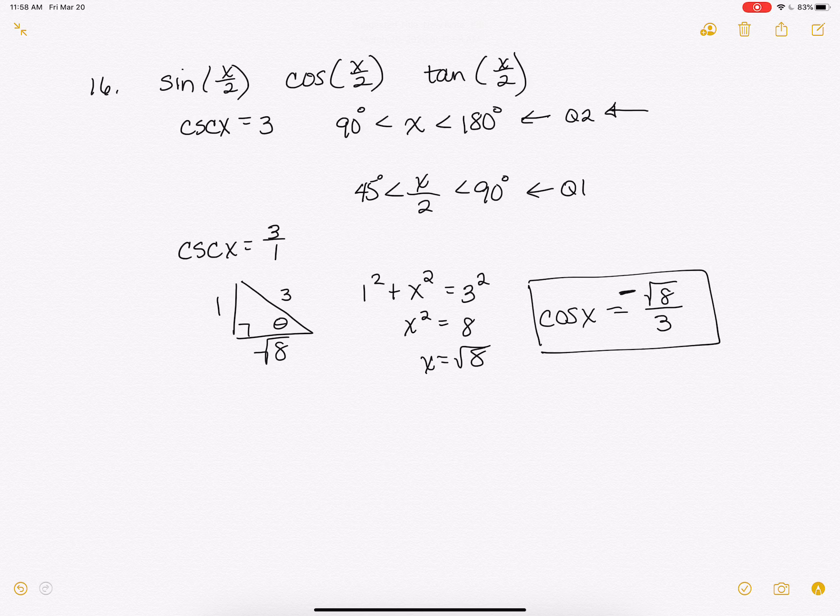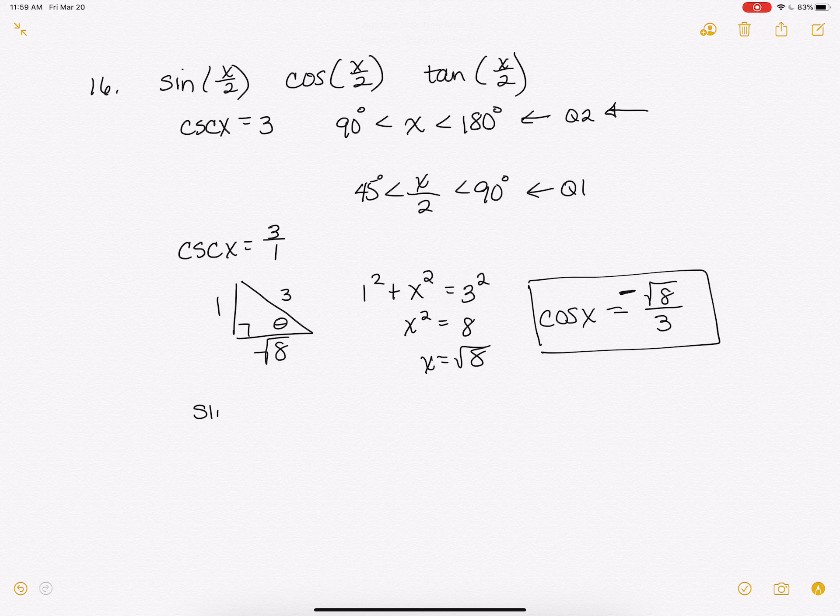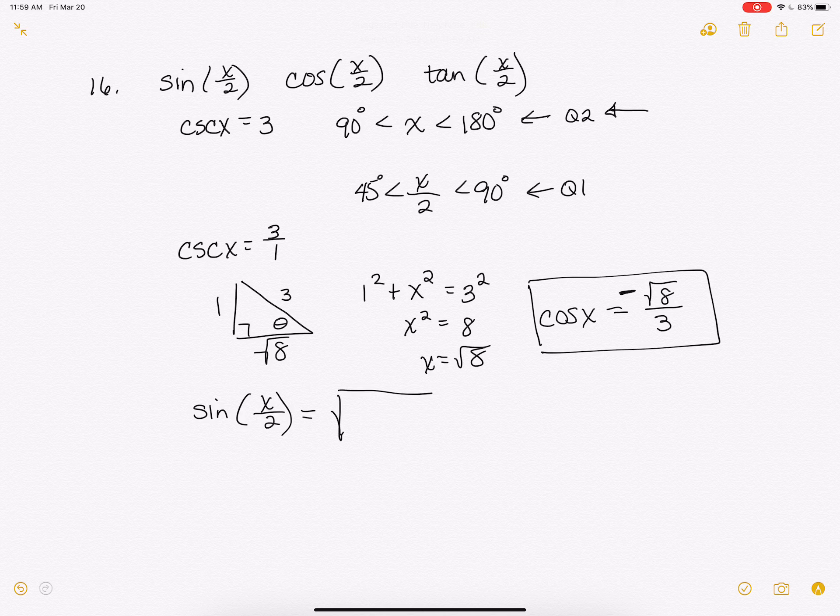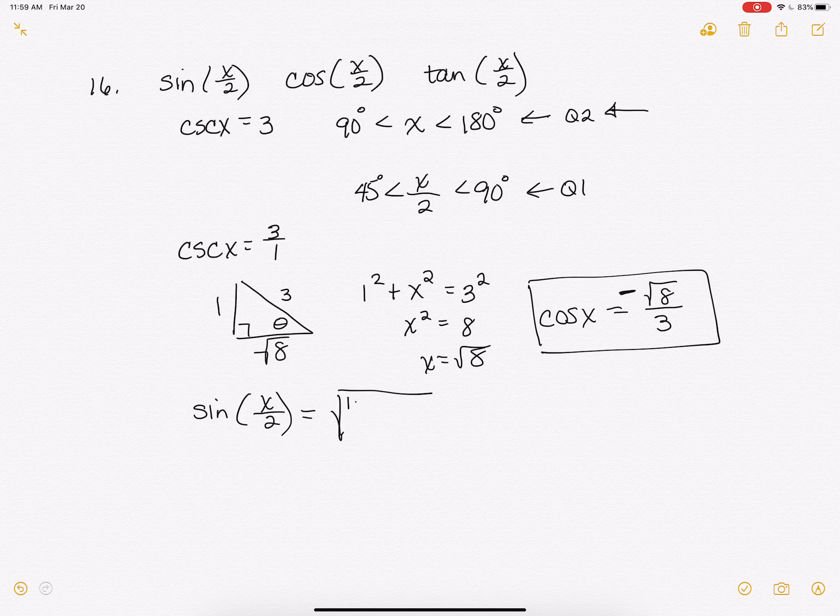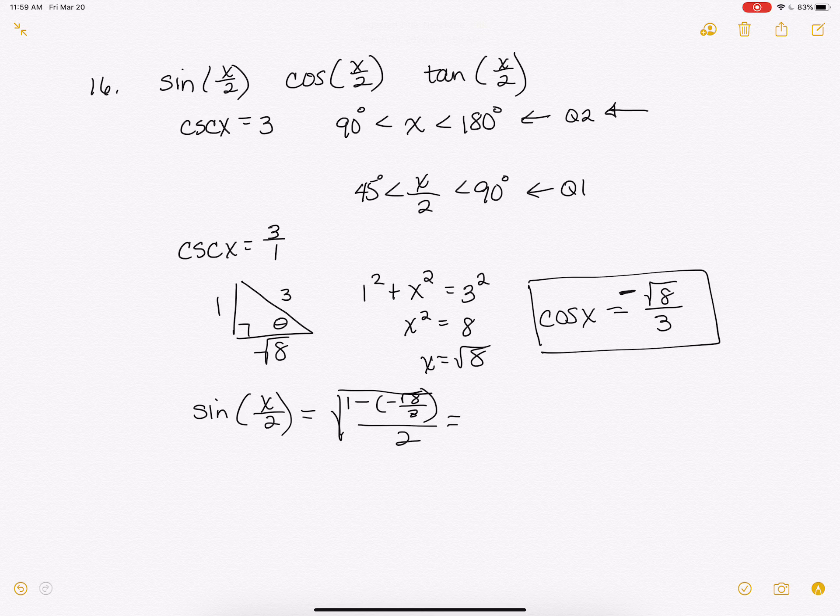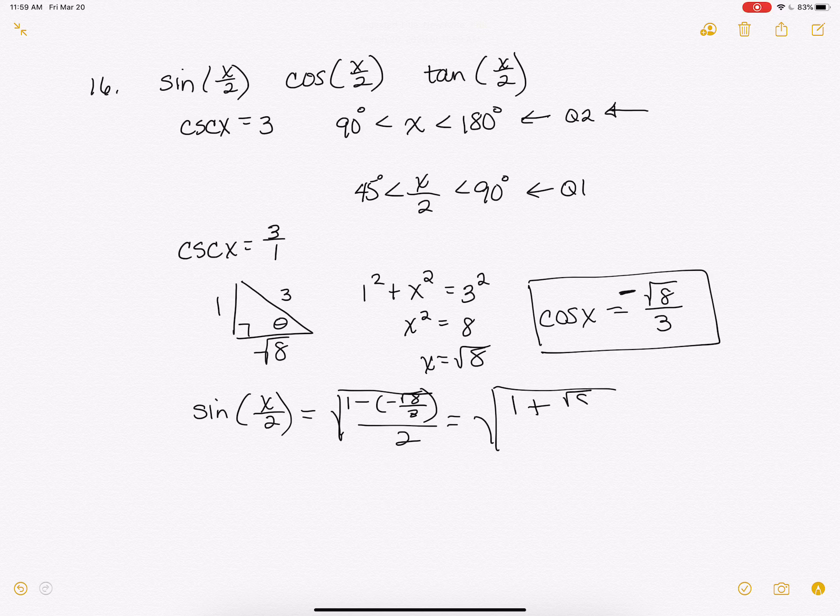Alright, now when I plug this in to my half angle formulas, I've got the sine of x over 2 equals the square root. And this is where I was talking about the half angle is important because that determines our sign. So it's going to be positive, but I've got 1 and then I've got minus, well that's negative. So that's going to be negative square root of 8 over 3 all over 2, which is going to be 1 plus the square root of 8 over 3 over 2.